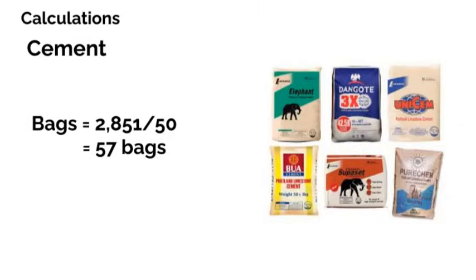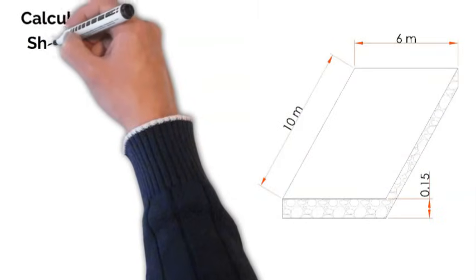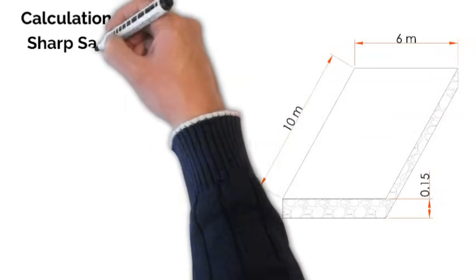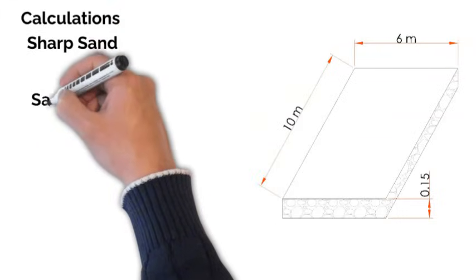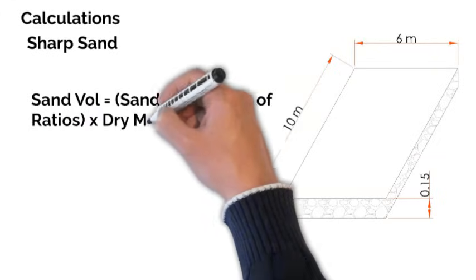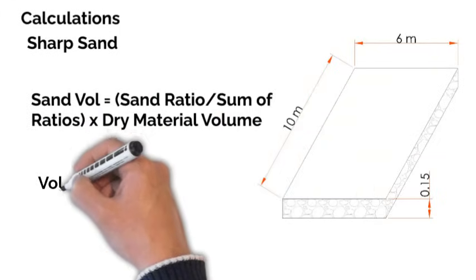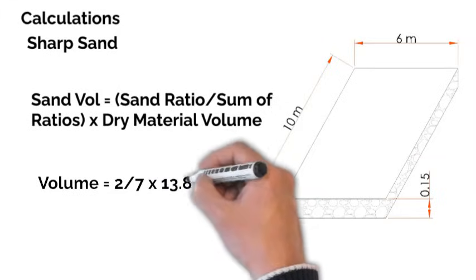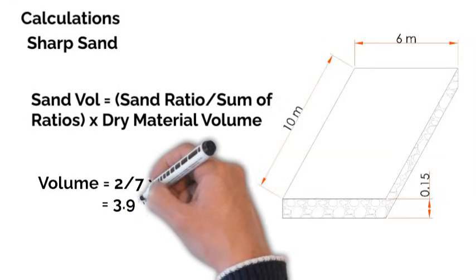The next material to calculate is the sharp sand. Based on the simple fraction, the sharp sand is calculated from 2 over 7 multiplied by 13.86, which equals 3.96 cubic meters.